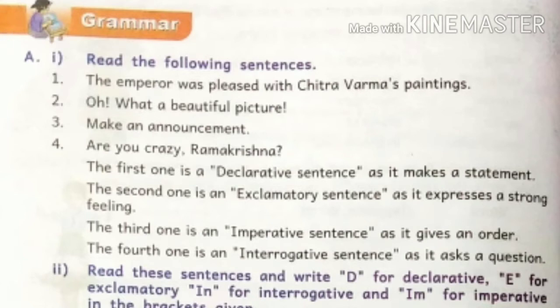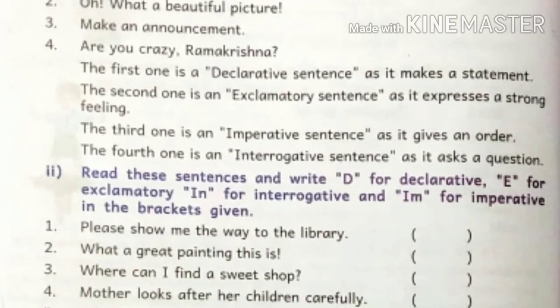The first sentence is a declarative sentence as it makes a statement. The second one is an exclamatory sentence as it expresses a strong feeling. The third one is an imperative sentence as it gives an order. The fourth one is an interrogative sentence as it asks a question.